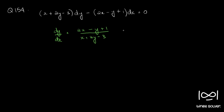This is a non-homogeneous equation. We have to convert it into homogeneous form. To do that, first we check whether the ratio of the coefficients of x in the numerator and denominator equals the ratio of the coefficients of y in numerator and denominator. Here it is 2 by 1 for x and minus 1 by 2 for y. So they are not equal.